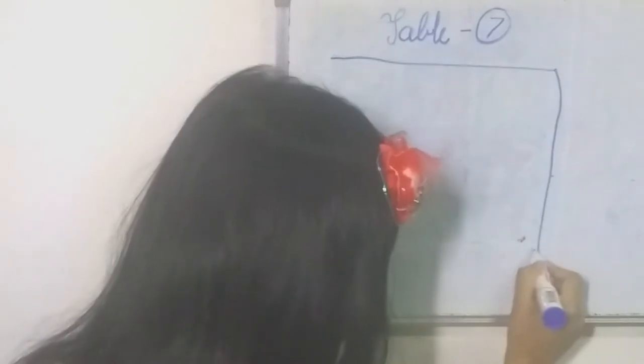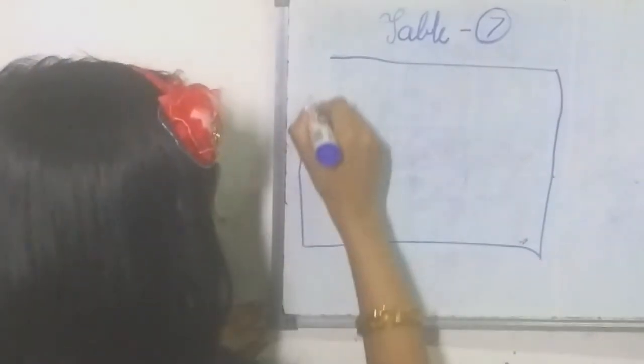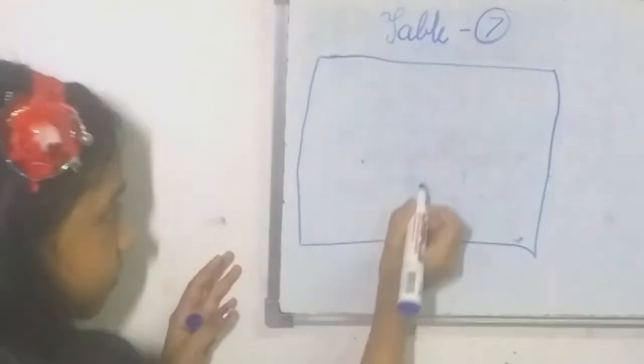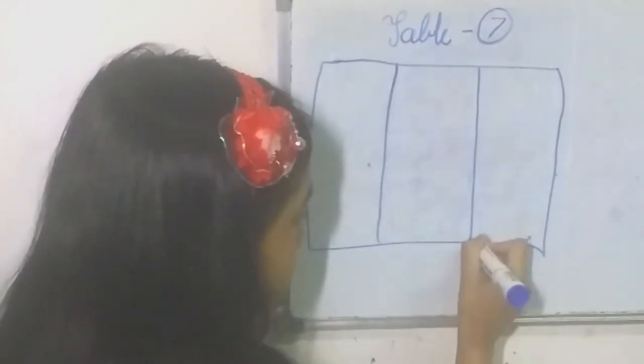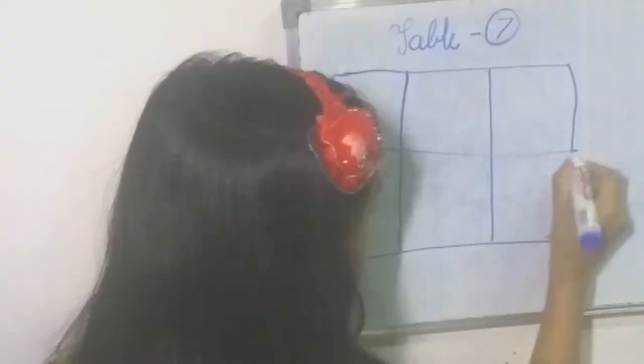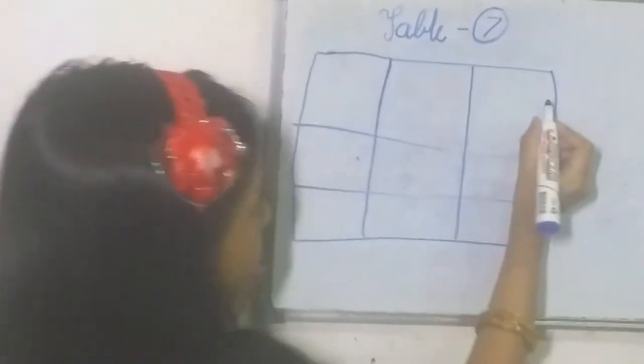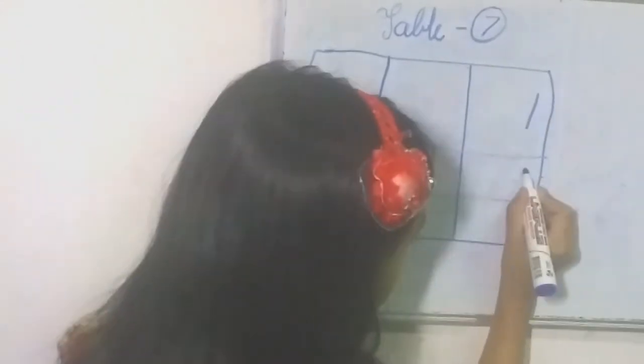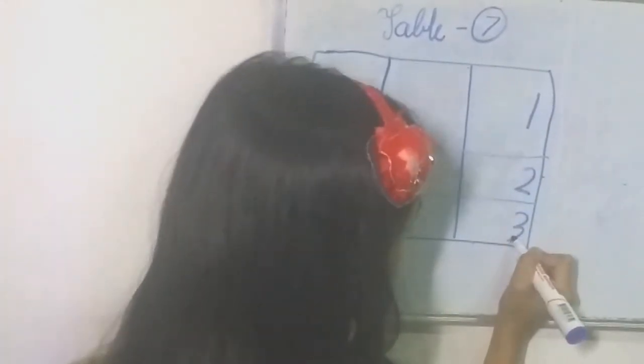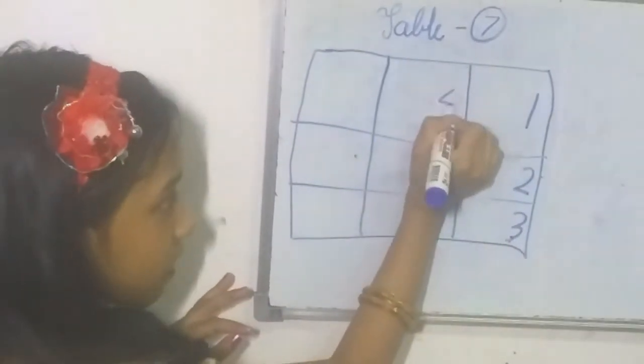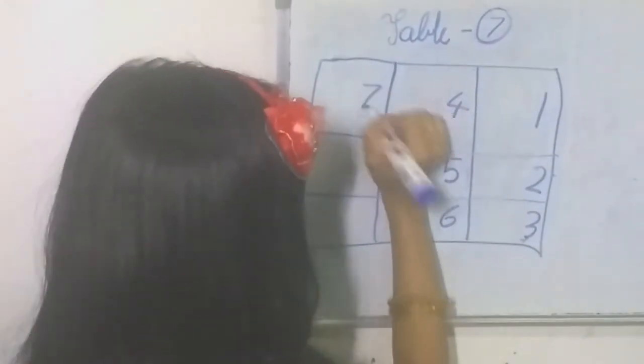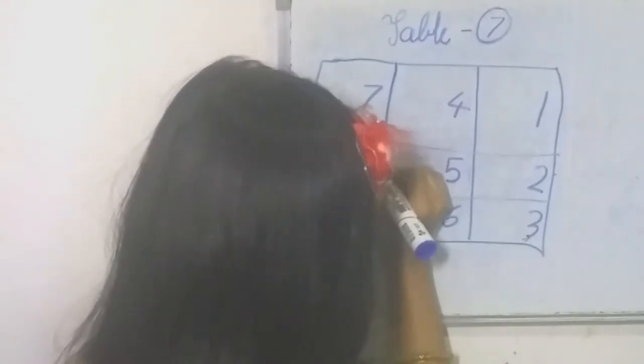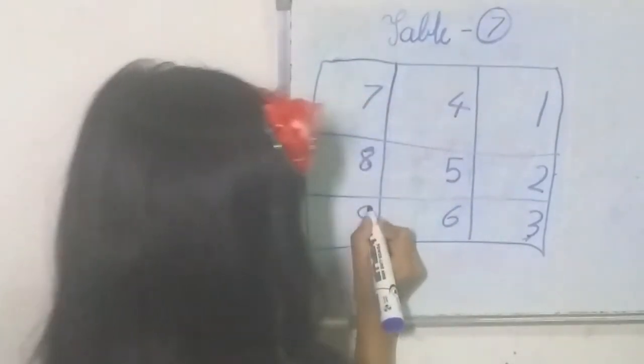First, we have to draw a square and draw two standing lines, two sleeping lines. And write one, two, three, four, five, six, seven, eight, nine.